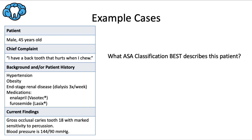For this kind of question, we're really focusing on the medical history and maybe some current findings like vital signs or blood sugar. We can see that this patient has hypertension, and looking at their medications, they're taking two medications used to control hypertension. Remember, hypertension is ASA 2 if it's well-controlled, and ASA 3 if it's poorly controlled.